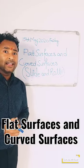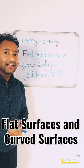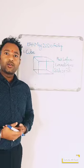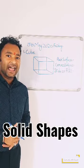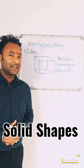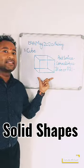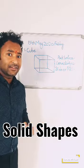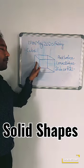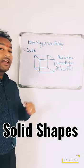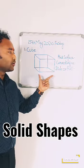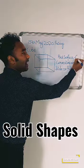Now to identify more shapes — which can slide and which can roll — let's begin with some solid shapes. I am going to identify which has flat surfaces and which has curved surfaces. The first shape is cube. Can you please tell me how many flat surfaces are there? There are 1, 2, 3, 4, 5, and 6. So there are 6 flat surfaces in a cube.